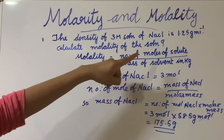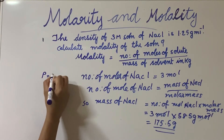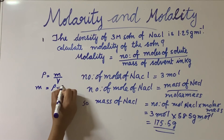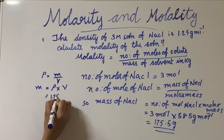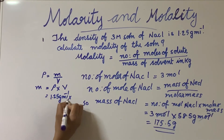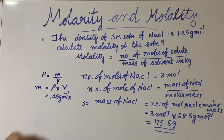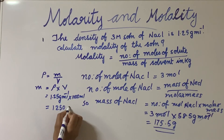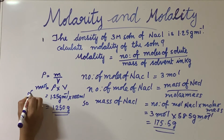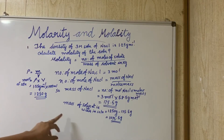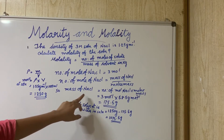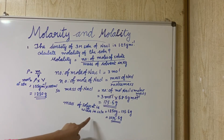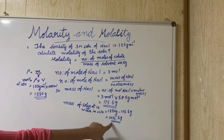Using density equals mass divided by volume, mass of solution equals density times volume: 1.25 g/mL times 1000 mL equals 1250 grams. Mass of solvent equals mass of solution minus mass of NaCl: 1250 minus 175.5 equals 1074.5 grams of solvent.